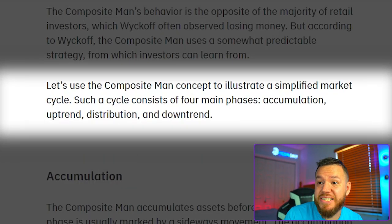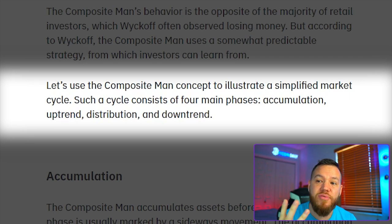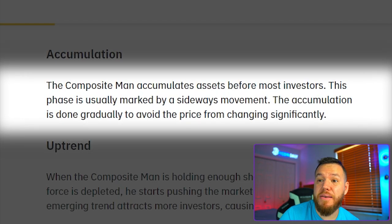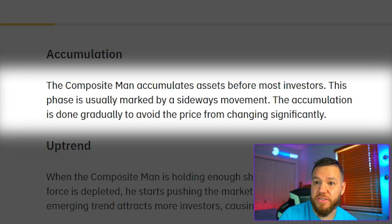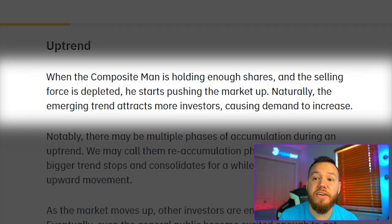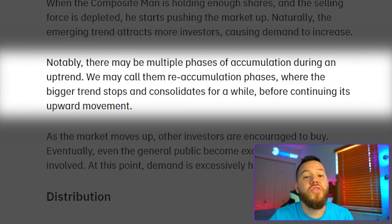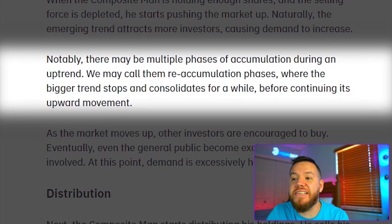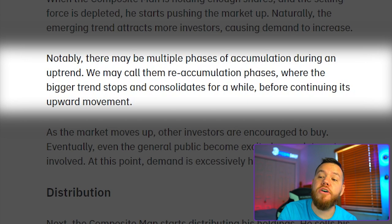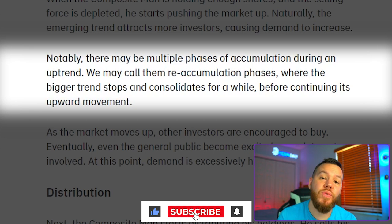Let's use the composite man concept to illustrate a simplified market cycle, which consists of four main phases: accumulation, uptrend, distribution, and downtrend. In accumulation, the composite man accumulates assets before most investors — this phase is usually marked by sideways movement. Once he's holding enough shares and selling force is depleted, he starts pushing the market up. The emerging trend attracts more investors, causing demand to increase. During any uptrend, there are multiple re-accumulation phases where the bigger trend stops and consolidates before continuing its upward movement.